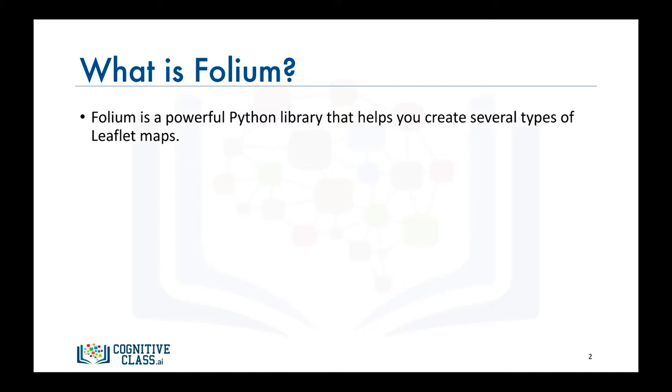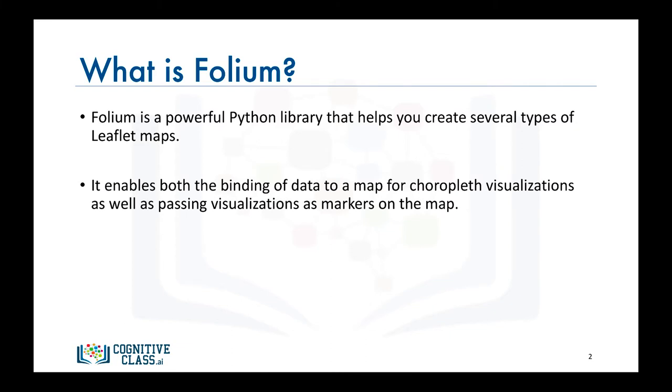With Folium, you can create a map of any location in the world as long as you know its latitude and longitude values. You can also create a map and superimpose markers as well as clusters of markers on top of the map for cool and very interesting visualizations.